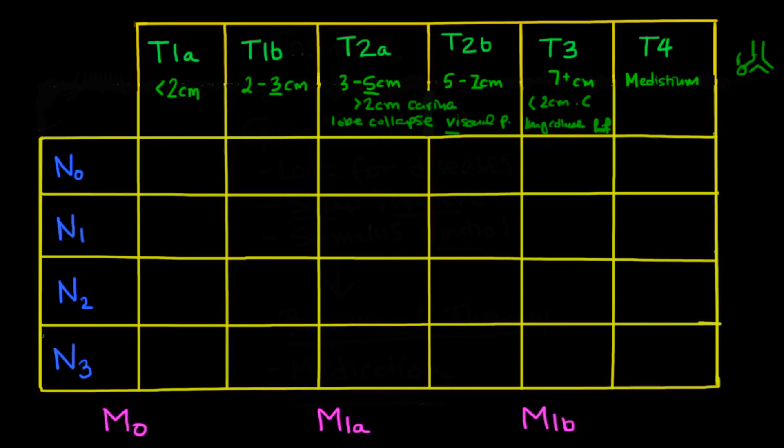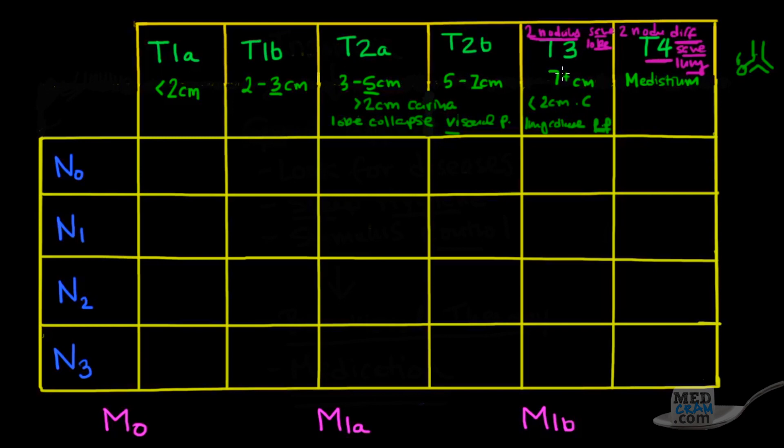What could give you a T4 is if you have two nodules in different lobes of the same lung. So for instance, if you had a nodule that you found or a cancer that you found in the right upper lobe and in the right lower lobe, they would be two nodules that are different lobes but in the same lung. That would get you into a T4, regardless of how big they were. However, if you had two nodules that were in the right upper lobe, they would be in the same lobe, same lung. That would get you to a T3.